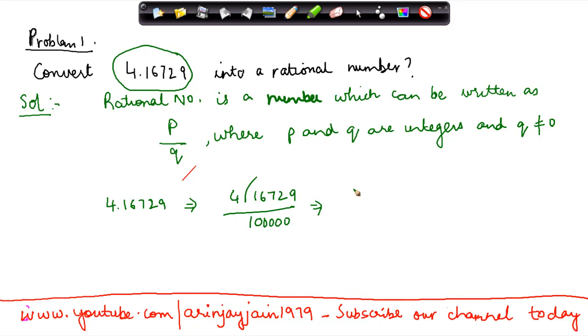So, 4.16729 can be written as 416729 divided by 100000.